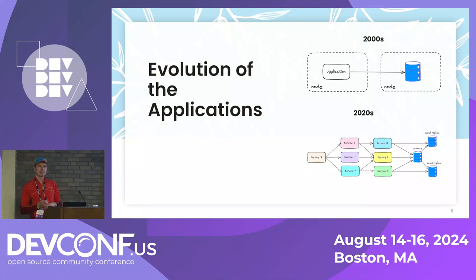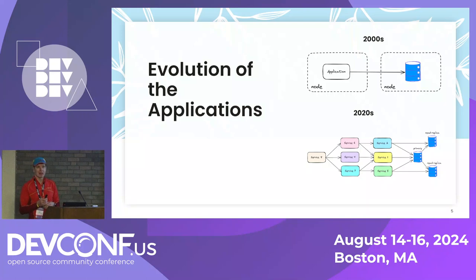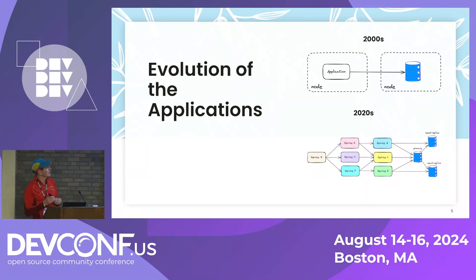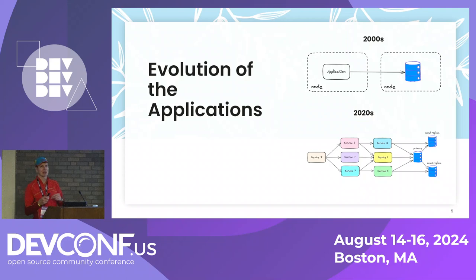Now we have a gazillion services operating who knows where, very dynamic in things like Kubernetes environments. Some of those are maybe third party. If you're operating in the cloud, you may not even know what's going on internally. So things have become much more complicated, and this is why good, thoughtful observability became very important. Because if a problem happens in your applications, or to prevent problems happening, you cannot just wing it anymore.